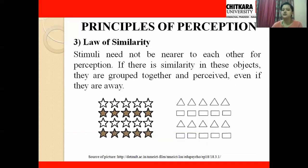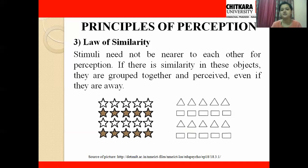Next is the law of similarity. A stimulus need not be near another for perception to group them. If there is similarity between objects, they are grouped together and perceived even if they are far apart. For example, in a picture with rows of stars, one row has light-colored stars and another has darker shaded stars — we perceive them as two groups based on similarity, not proximity. Similarly, different shapes scattered far apart are perceived as groups of rectangles and triangles based on shape similarity.